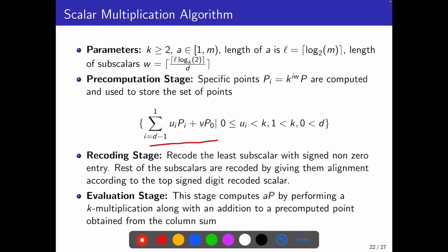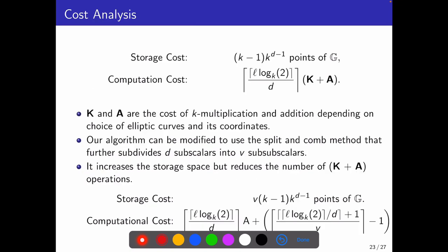Finally, in the evaluation stage, we perform an addition and k multiplication to compute a times P at each of its iteration. We express the storage cost in terms of number of points stored in the precomputation stage that is k minus 1 times k to the D minus 1. Since the length of each of the subscalars is W equals L times log k 2 by D, the computation cost turns out to be L times log k 2 by D many k multiplications and additions.